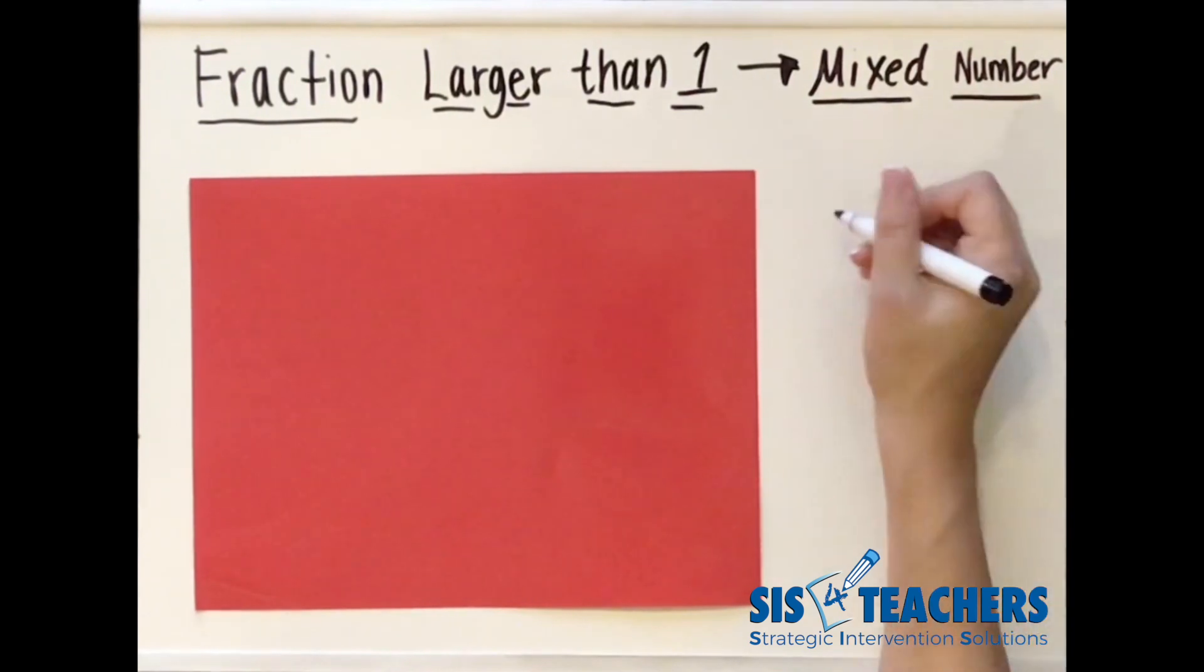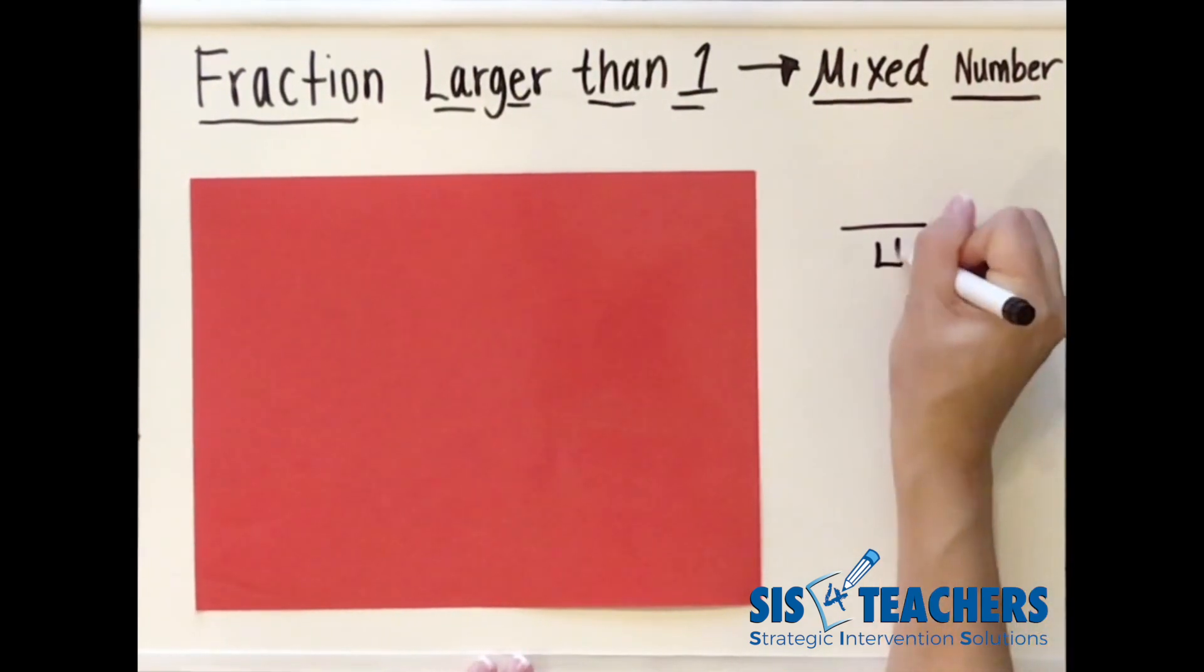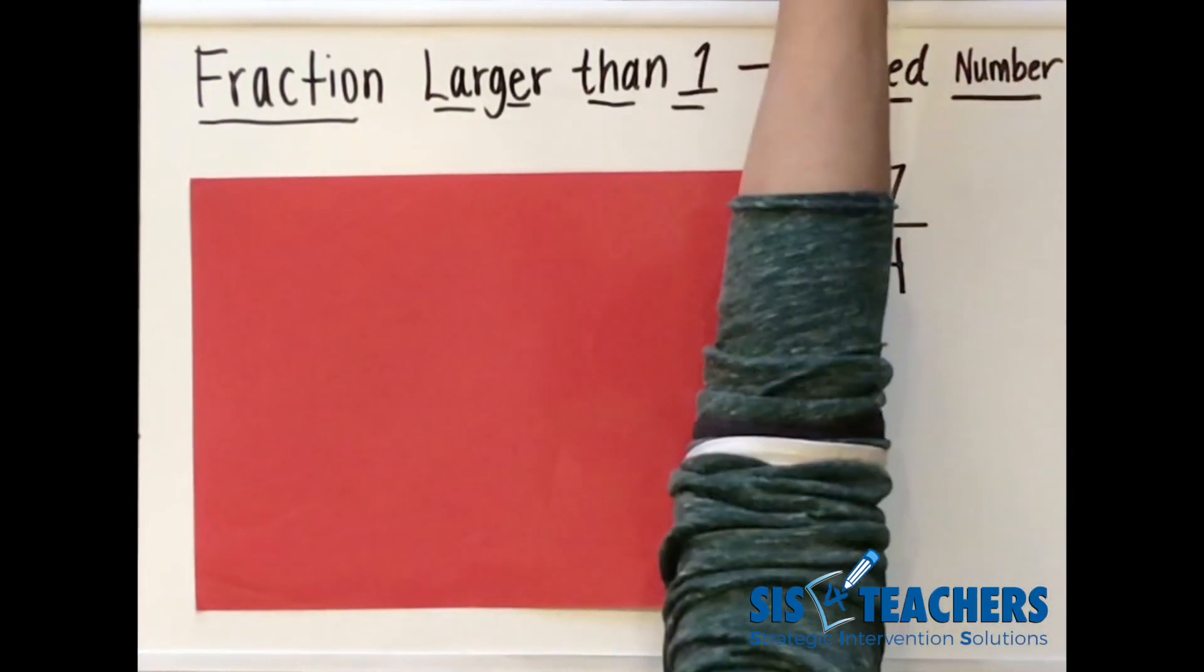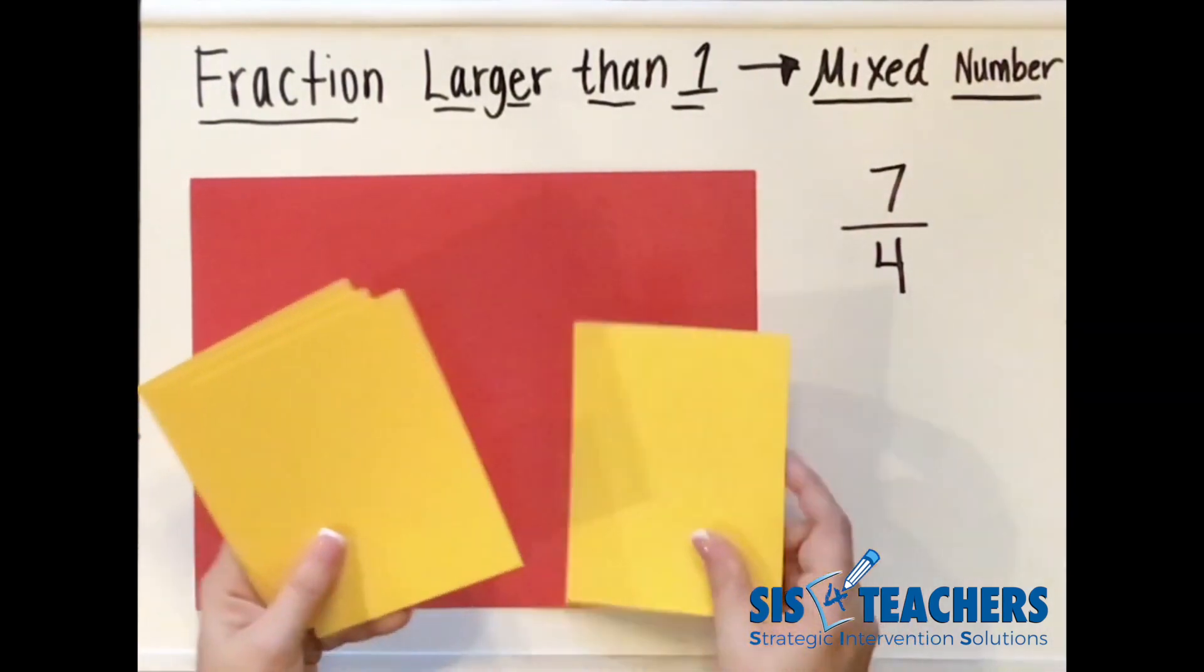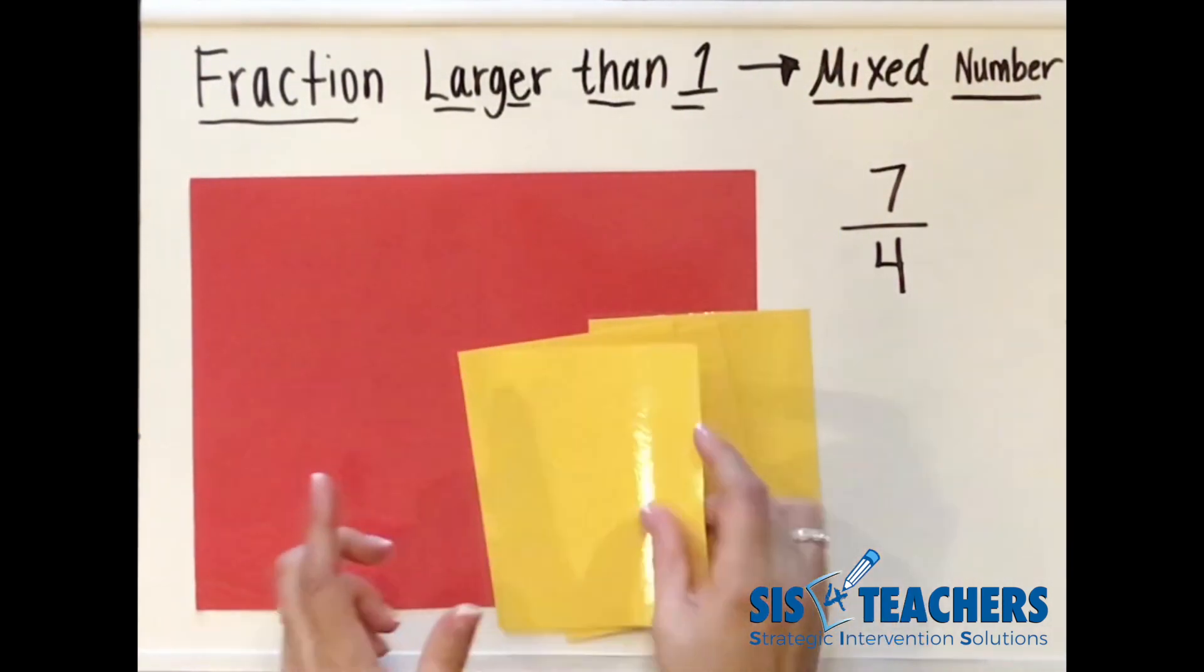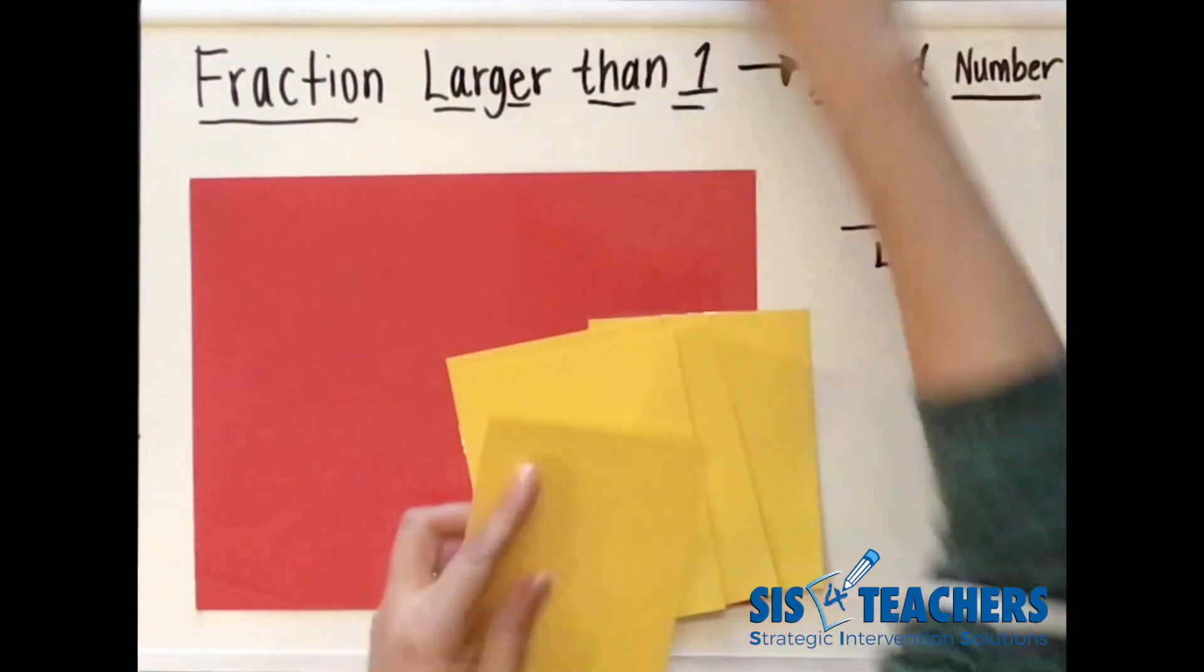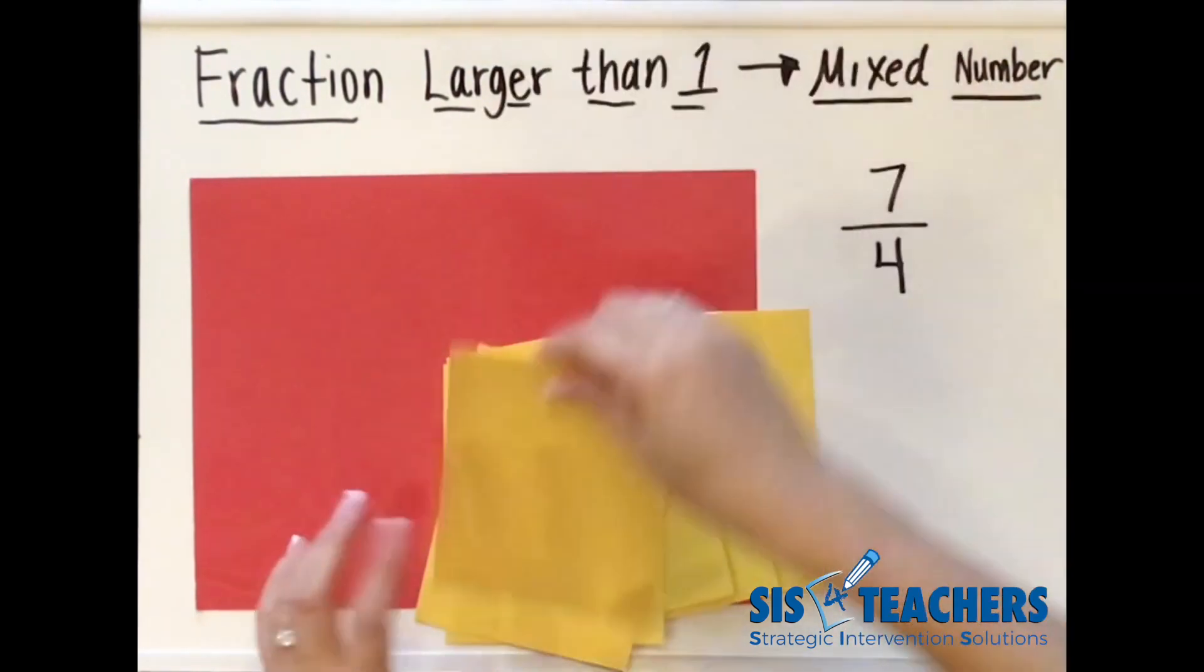Let's say I used fourths this time and maybe I wanted to use seven fourths. I'm going to first get out my seven fourths for students that might need to see this. One, two, three, four, five, six, seven.